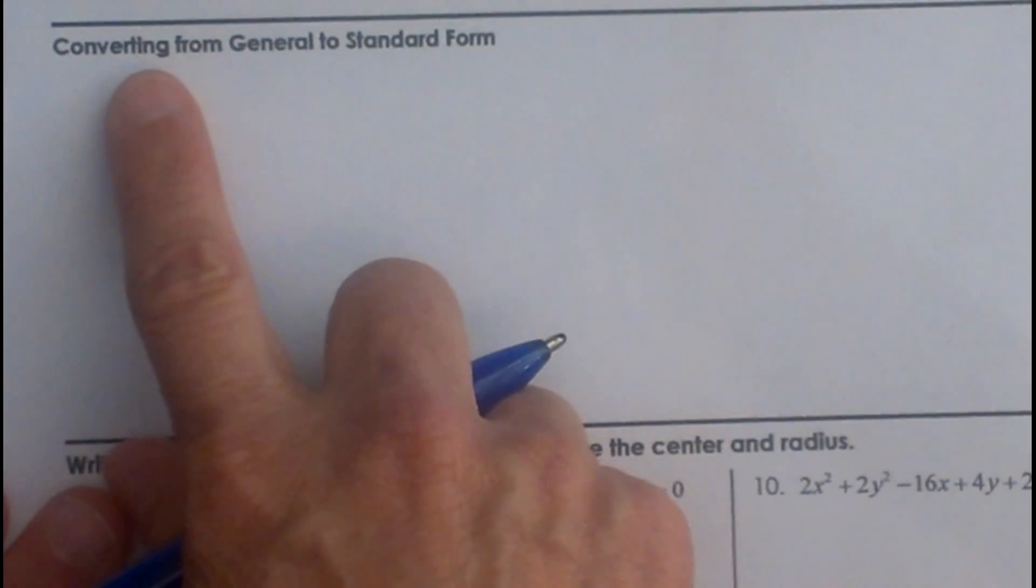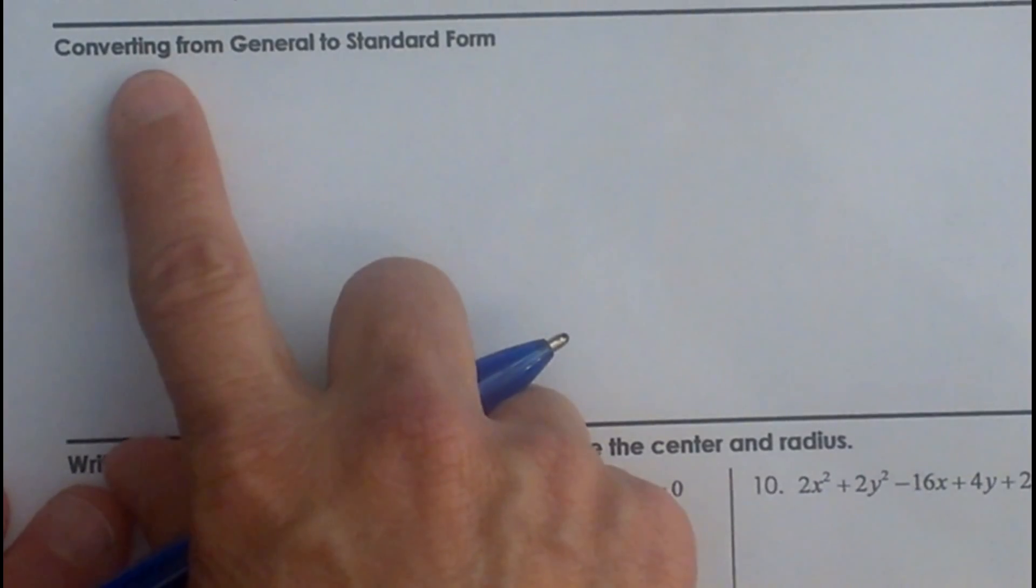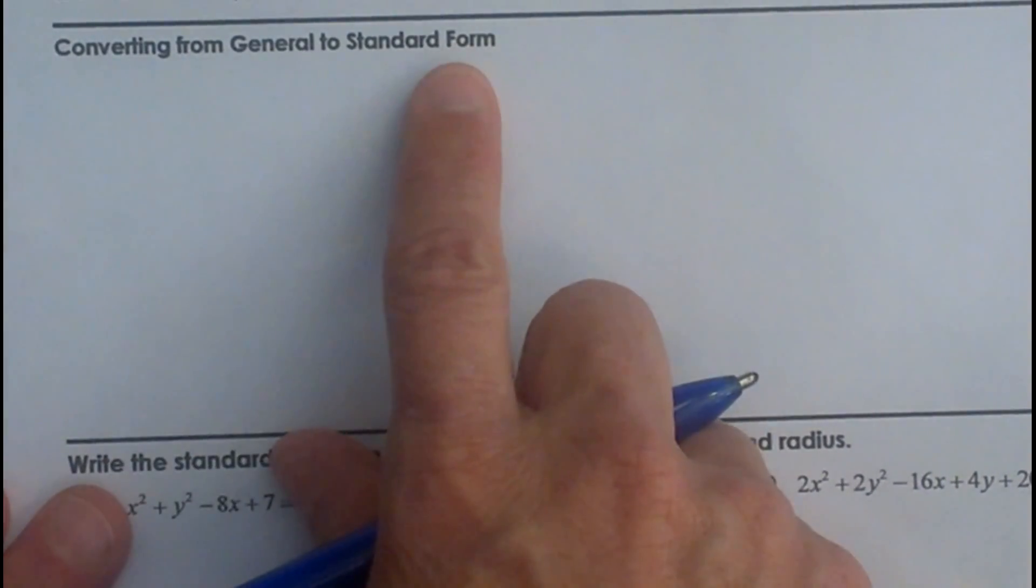What if we are given the coordinates of a circle in general form and we have to convert it back to standard? So this is what we are going to do.